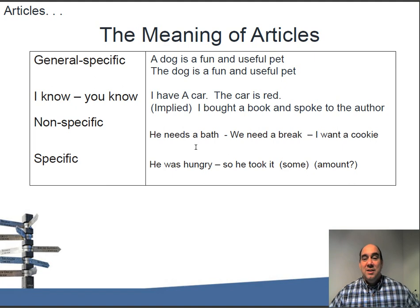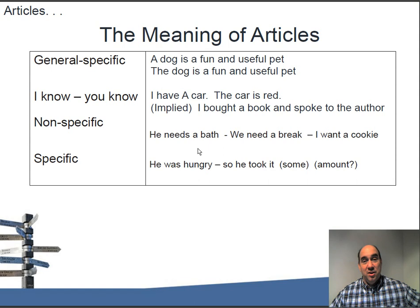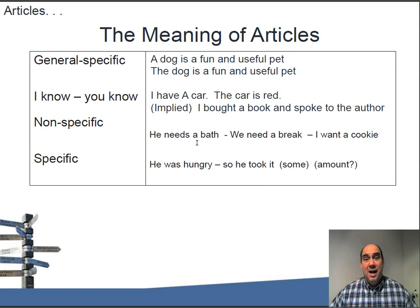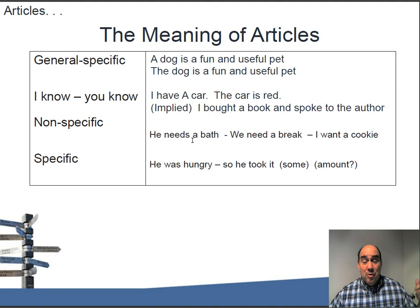Articles can provide information about whether something is generic or specific. For example, 'a dog is a fun and useful pet' is generic - no special particular dog. 'The dog is a fun and useful pet' refers to something specific. We can also look at it through the lens of 'I know and you know.' If I say 'I have a car,' I know about it but you don't. Then I say 'the car is red' - now I'm referring back to the car I mentioned, and since both of us know it, I use 'the.'